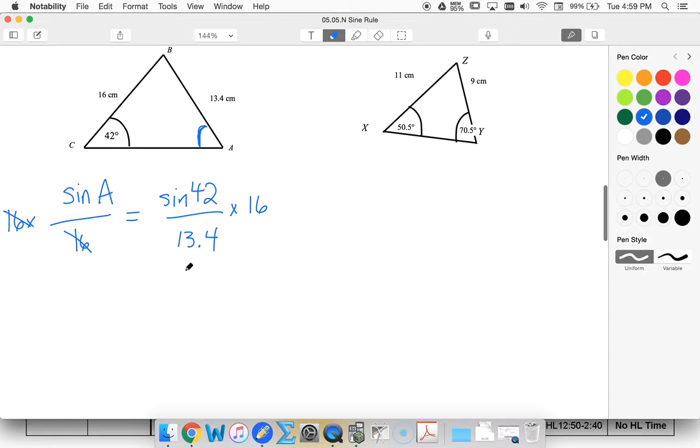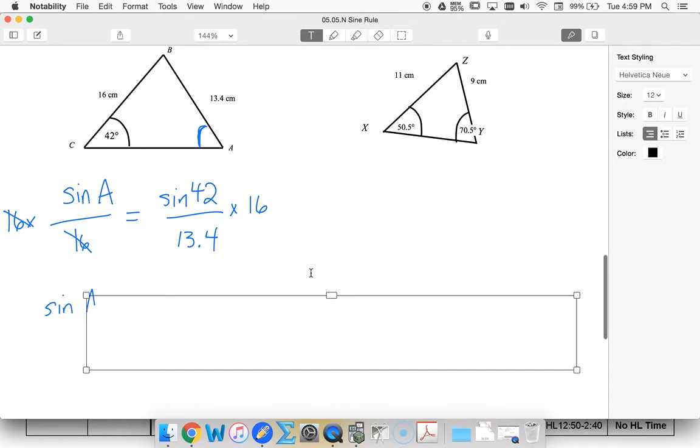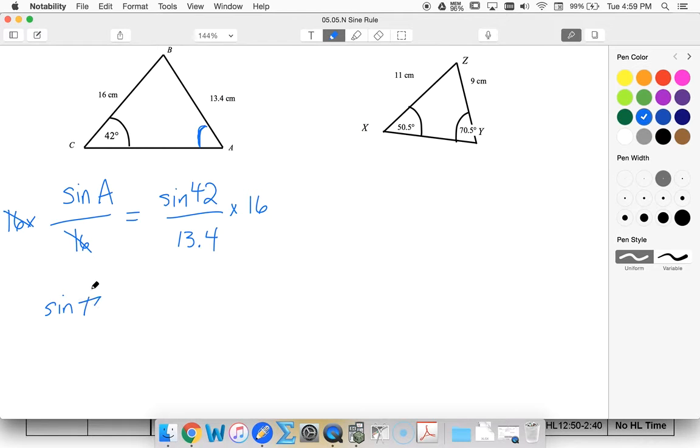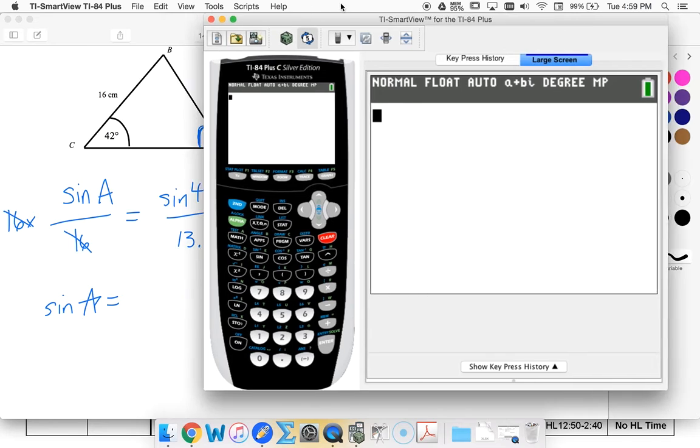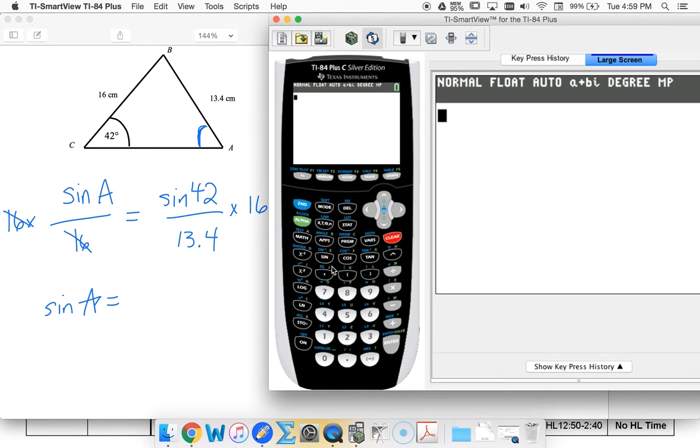I'm going to put all of this into my calculator. So I've got sine 42 divide by 13.4 times 16.